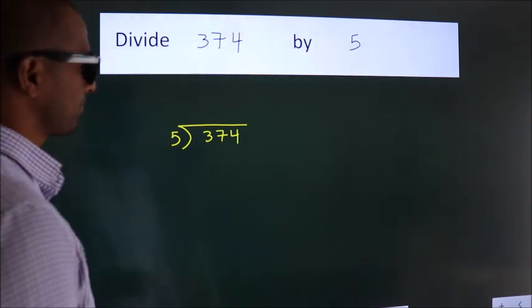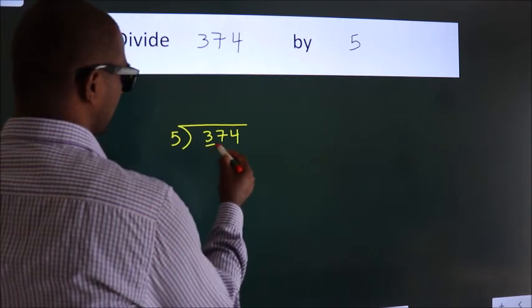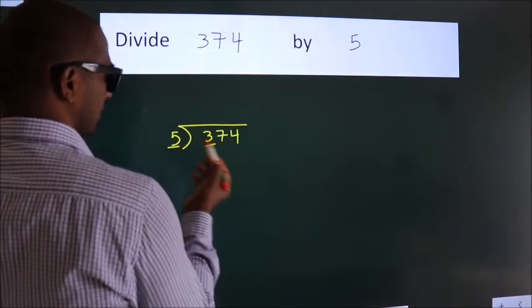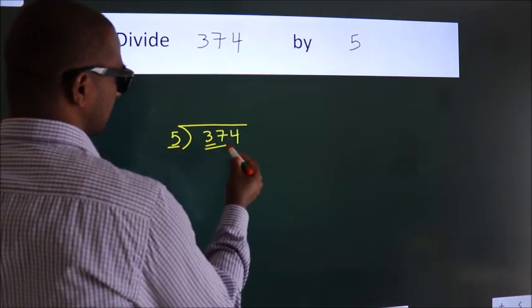Next, here we have 3, here 5. 3 is smaller than 5, so we should take 2 numbers: 37.